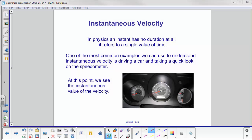In physics, an instant has no duration at all. It refers to a single value of time. A common example we can use to help us understand this is driving a car and taking a quick look at the speedometer. Or if you're a passenger, you look at the speedometer. At this point, we will see the instantaneous value of the velocity. That's the velocity you're going at that one specific time.